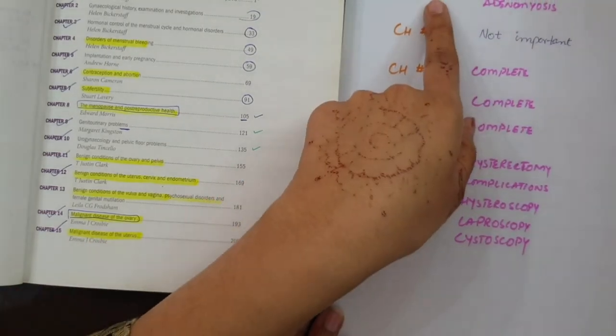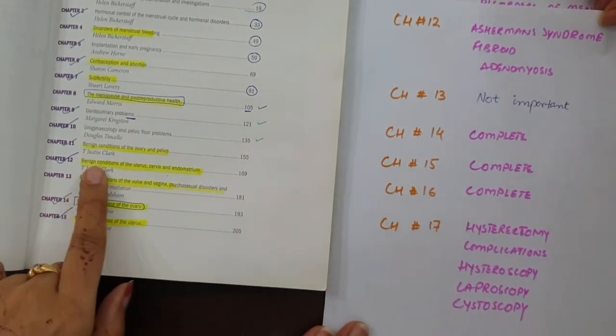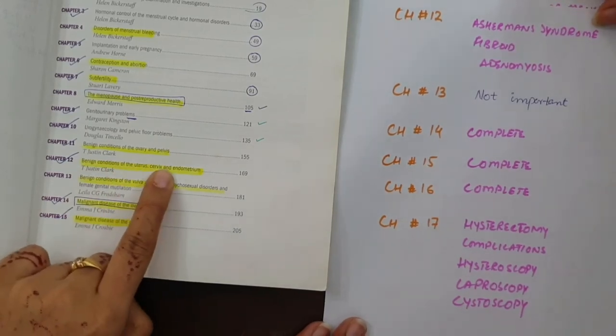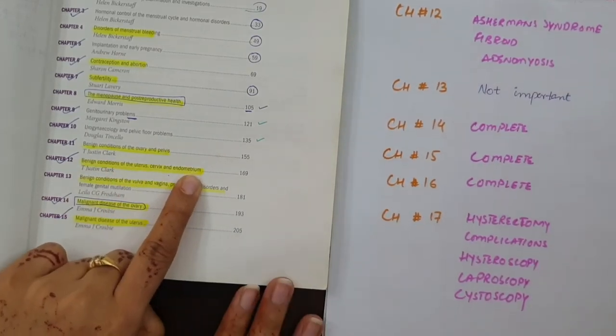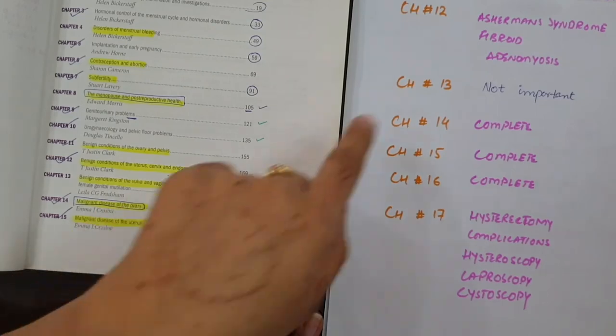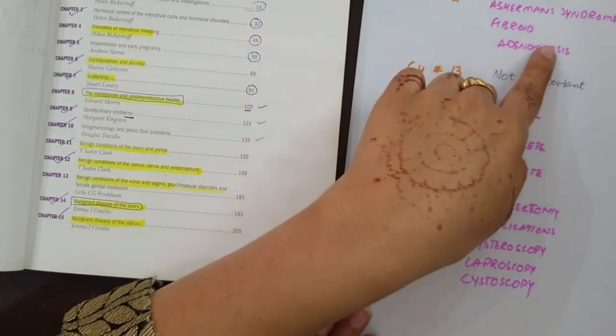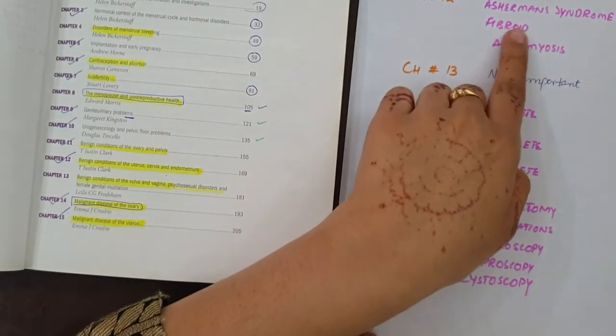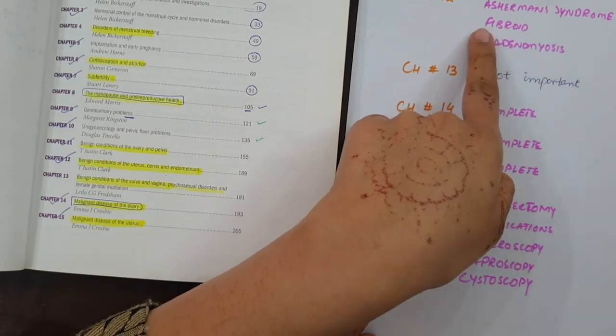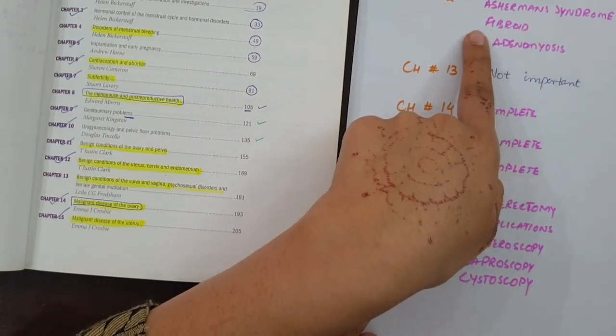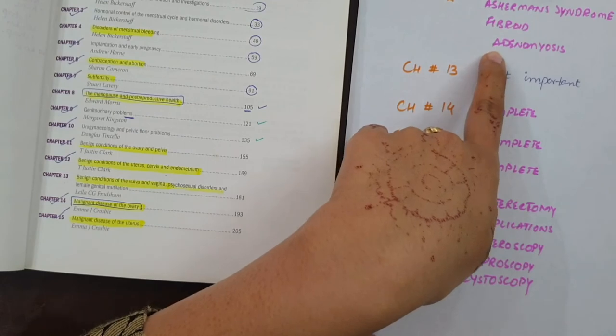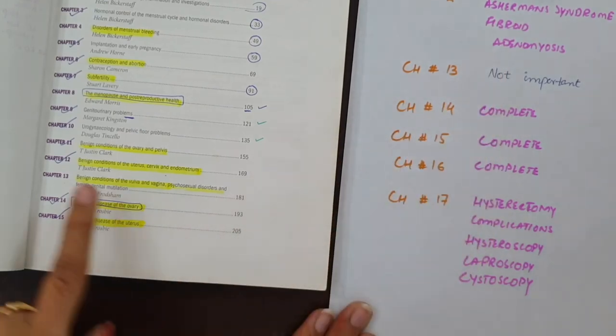Then comes chapter number 12. Chapter number 12 is benign conditions of the uterus, cervix and endometrium. The whole chapter is important. More important are Asherman syndrome causes, then treatment and fibroid. Fibroid itself is complete, very important topic, and adenomyosis. Adenomyosis is also very important topic.